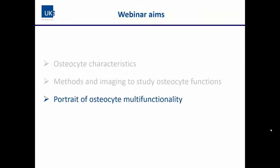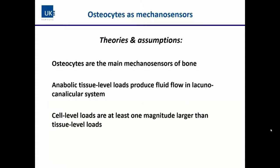Now let's dive into the multi-functionality of osteocytes. The first function attributed to osteocytes was that of being the mechanosensors of bone. While osteocytes are clearly not the only mechanosensitive cell type in bone, data shows they have great sensitivity to mechanical stimuli. It is assumed that when an anabolic load is placed on bone, fluid flow is induced inside the lacuno-canalicular system surrounding the osteocyte, stimulating these cells — with loading magnitudes at least one order larger than what the tissue experiences at a larger scale.